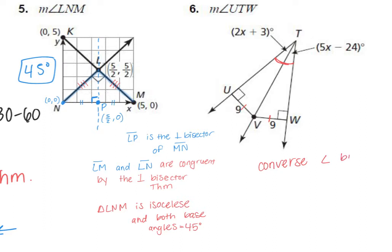Why is it the converse and not the regular angle bisector theorem? For the regular theorem, you always need to know that this angle is congruent to this angle — we weren't given that information. So we can't use the regular theorem; we have to use the converse. Now we know those two angles must be the same.